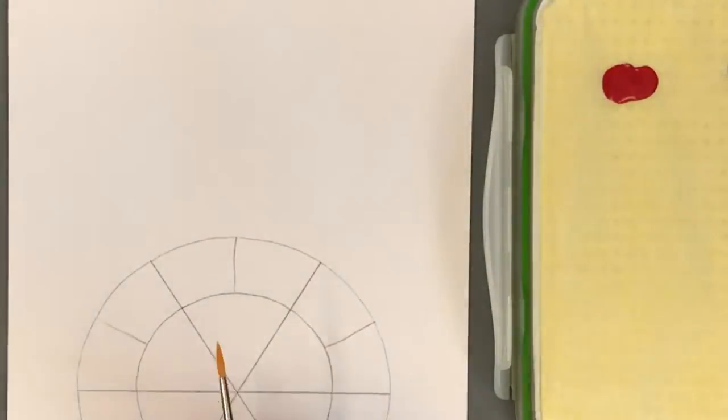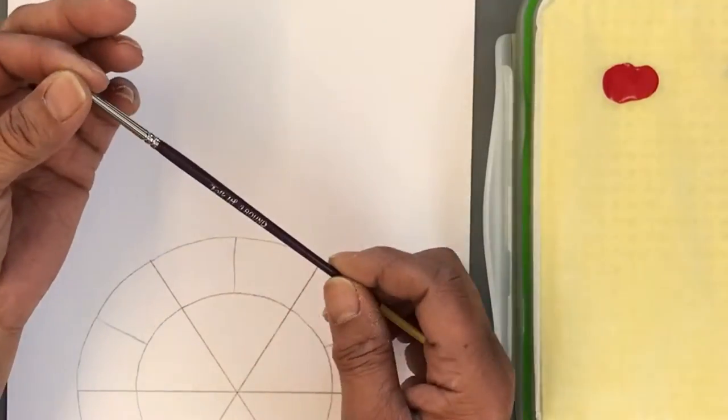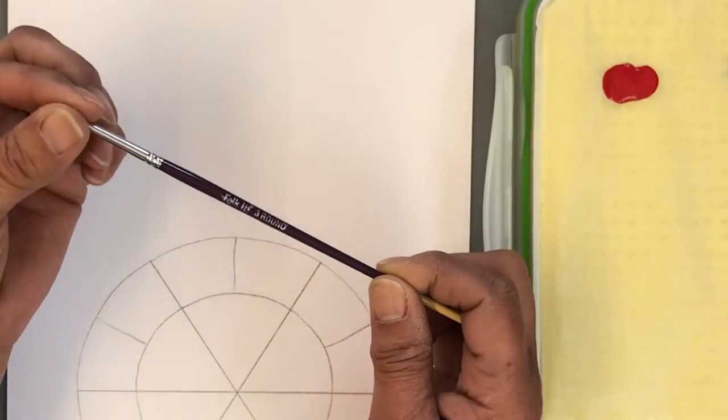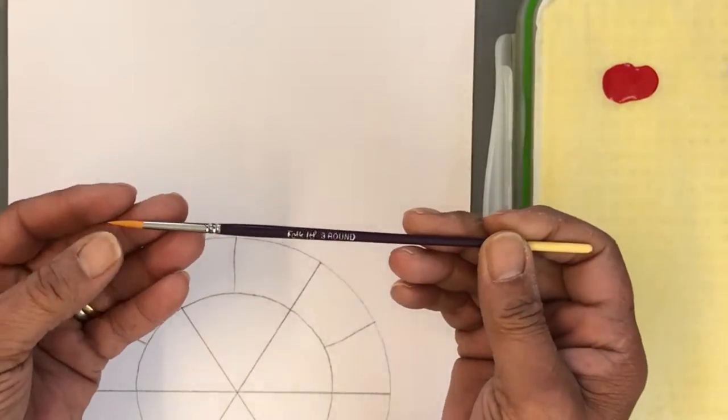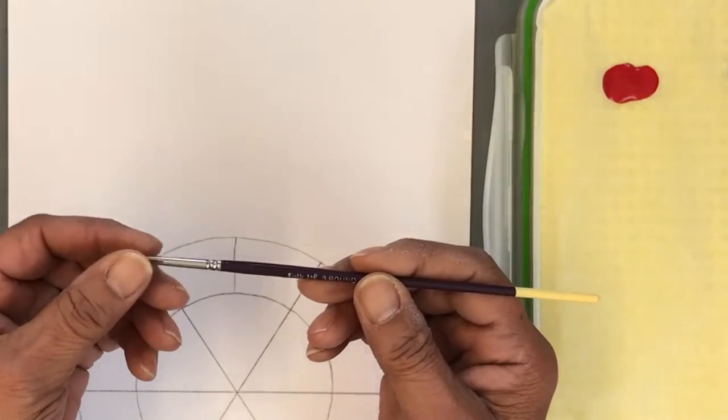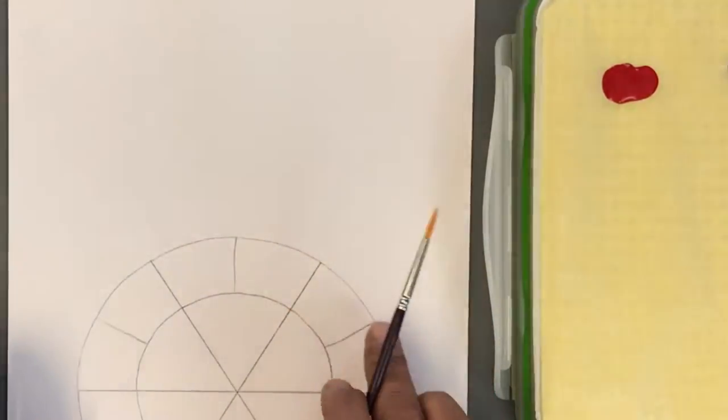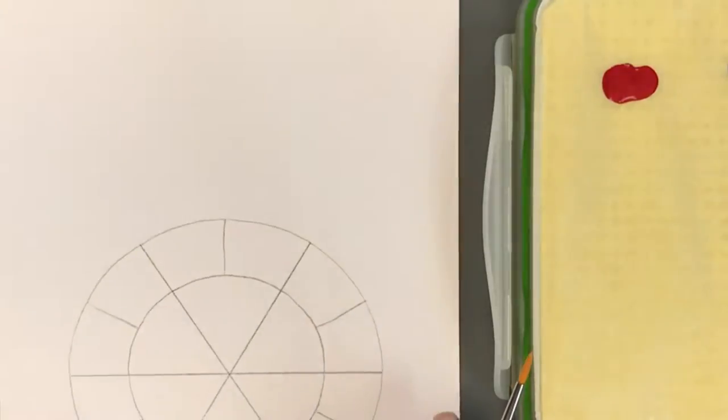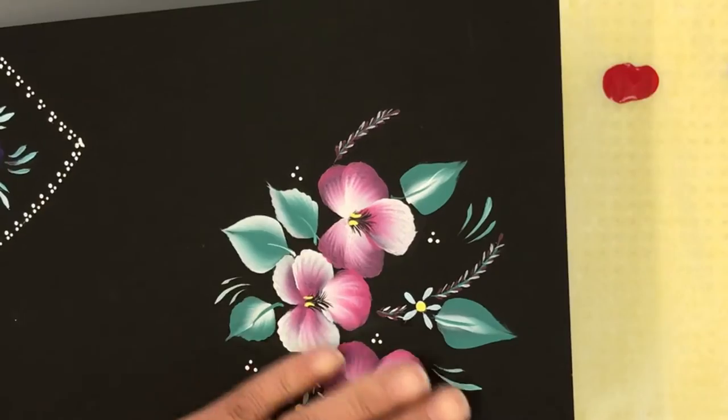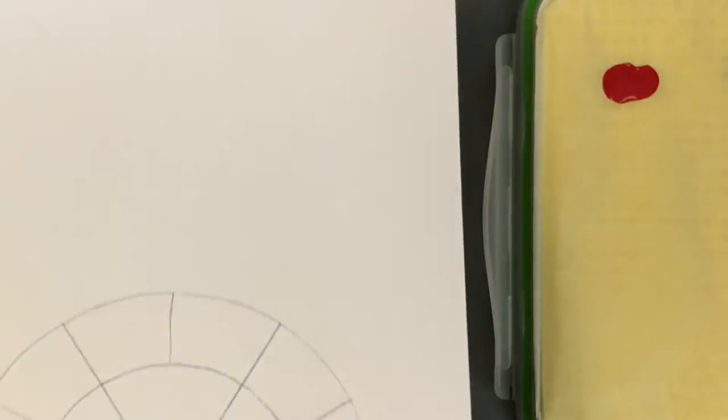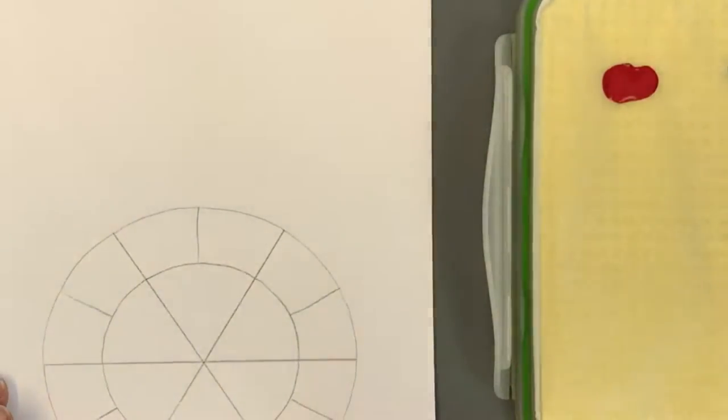So you will need, I'm using a number three round brush and this is a new one so the strokes should be nice and even. You will need to trace your color wheel onto, I'm using the reverse of a mount board. I use these mount boards to practice designs and colors and I'm using the reverse of it so that the colors show up. If you haven't got mount board you do want a decent quality paper.